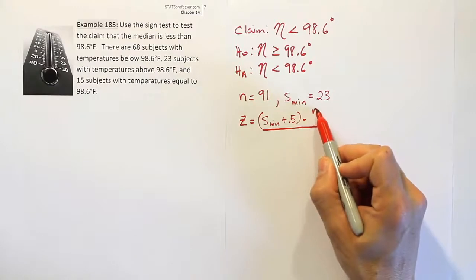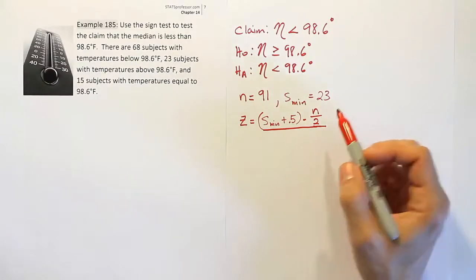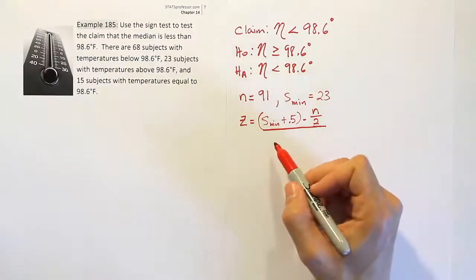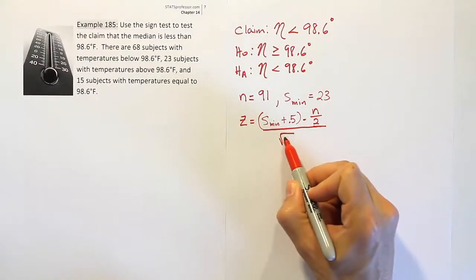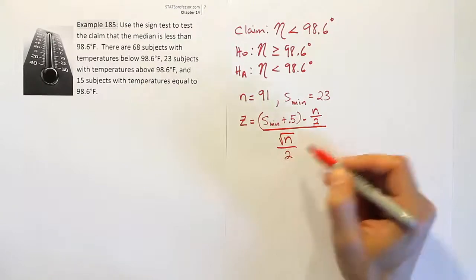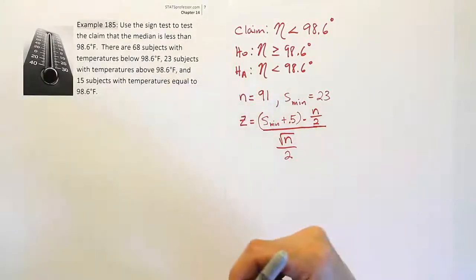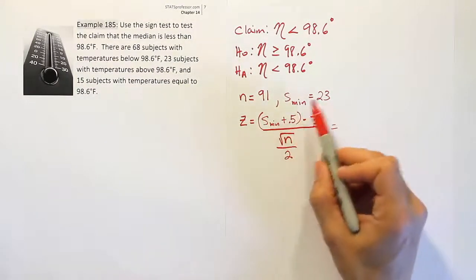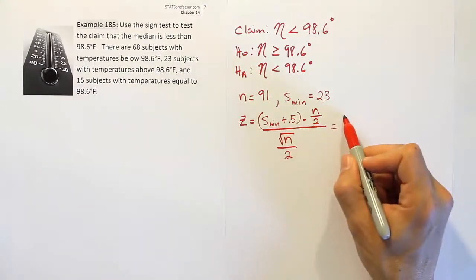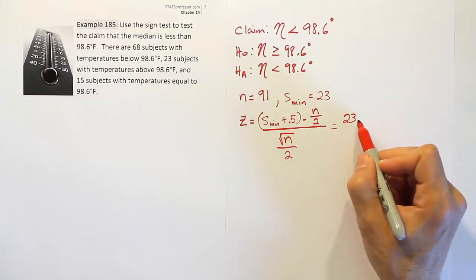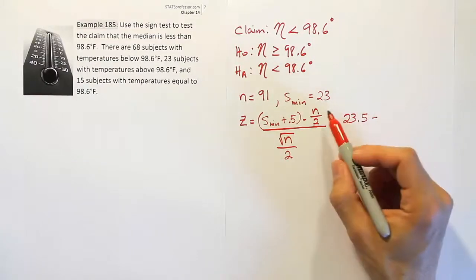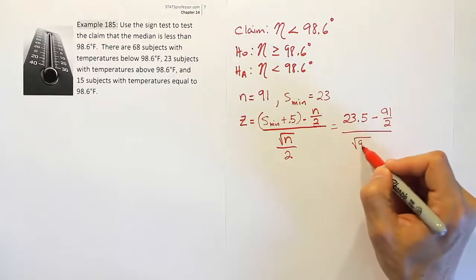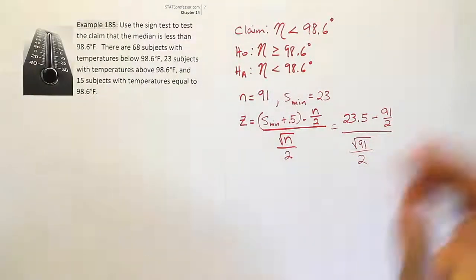Then we're going to subtract off the mean, which would be n over 2. This comes from the fact that it's a binomial distribution with a 50% probability of success. The standard deviation comes out to be the square root of n over 2. If you look back at the formulas for binomial probabilities, mean and standard deviation, you'll understand why these values are what they are. From there we can plug in these numbers. S min is 23, so it'll be 23.5 minus 91 over 2, divided by the square root of 91 over 2.